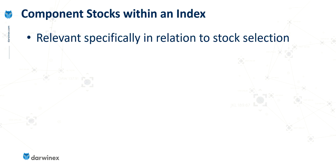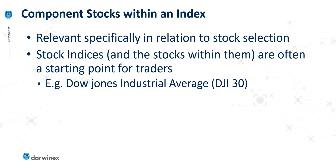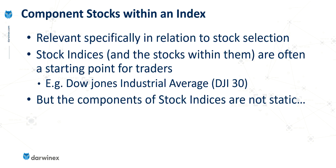Survivorship bias tends to be most relevant specifically in relation to stock selection. For large cap stocks, there tend to be stock indices, which are effectively a weighted collection of individual stocks, such as the Dow Jones Industrial Average, which contains 30 of the largest US stocks. These stocks are often a starting point for many traders. But the problem of survivorship bias exists because these stock indices and the stocks that make them up are not static.